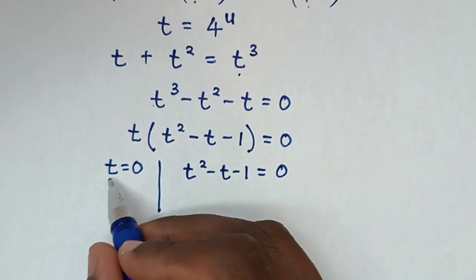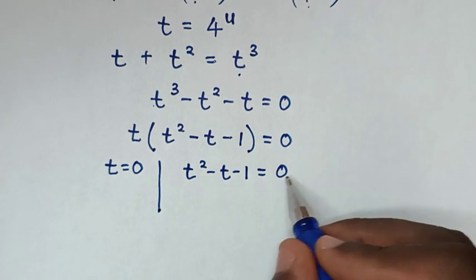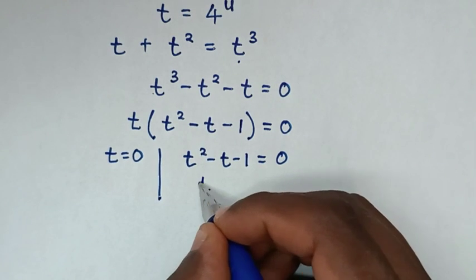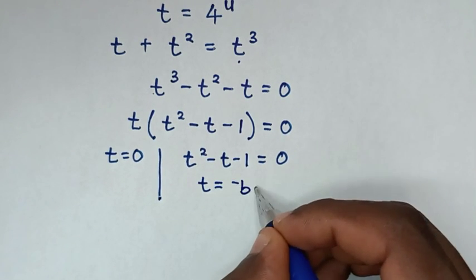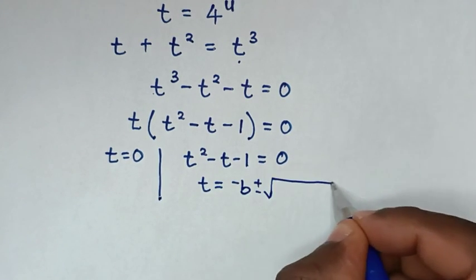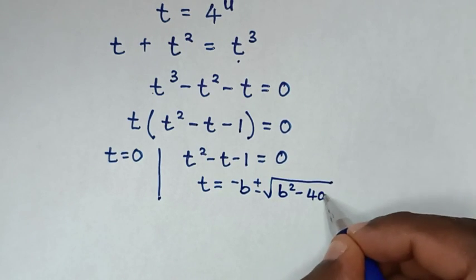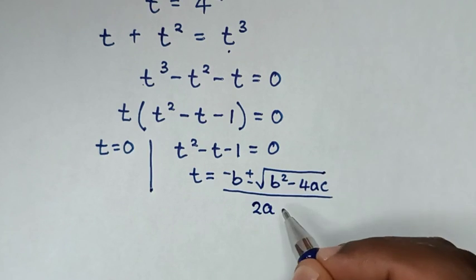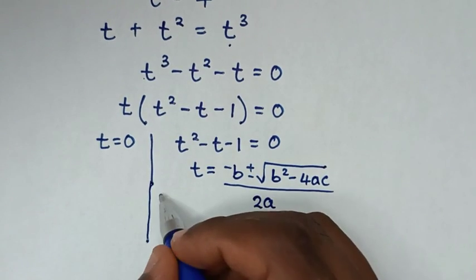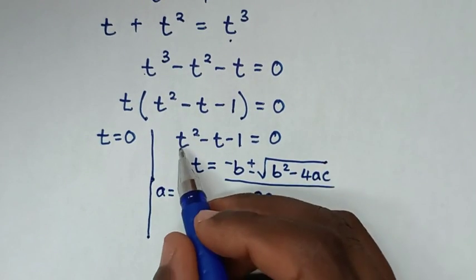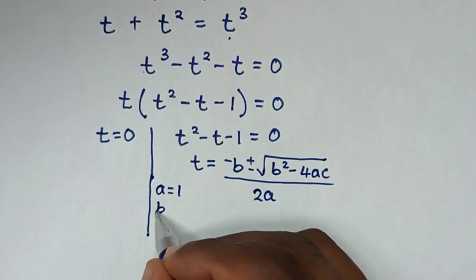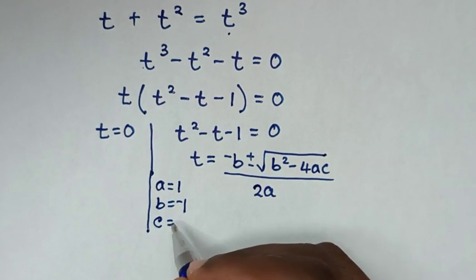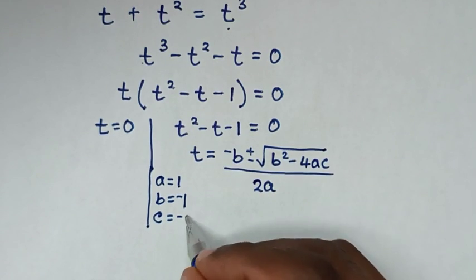To find the value of t from this quadratic equation, we use the quadratic formula: t equals negative b plus or minus square root of b squared minus 4ac, over 2a. Where a equals 1 (coefficient of t squared), b equals negative 1 (coefficient of t), and c equals negative 1 (constant).